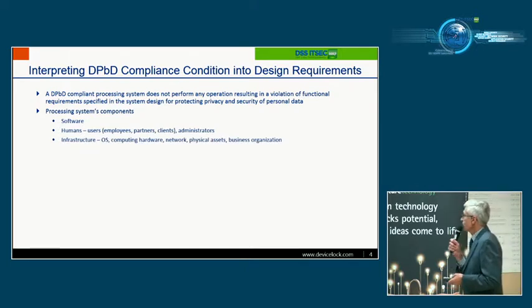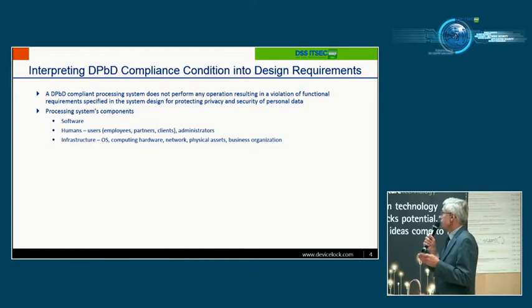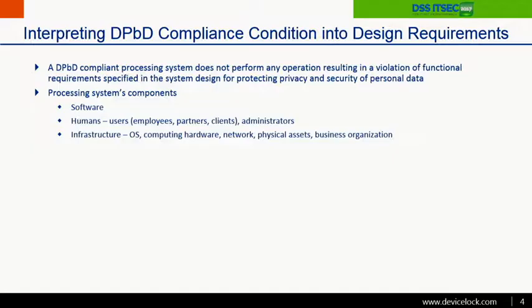One important note: a processing system architecture includes several components — software, humans such as employees, partners, clients, and administrators who interact with the system, as well as infrastructure including operating systems, computing hardware, network, physical assets, and business organization.